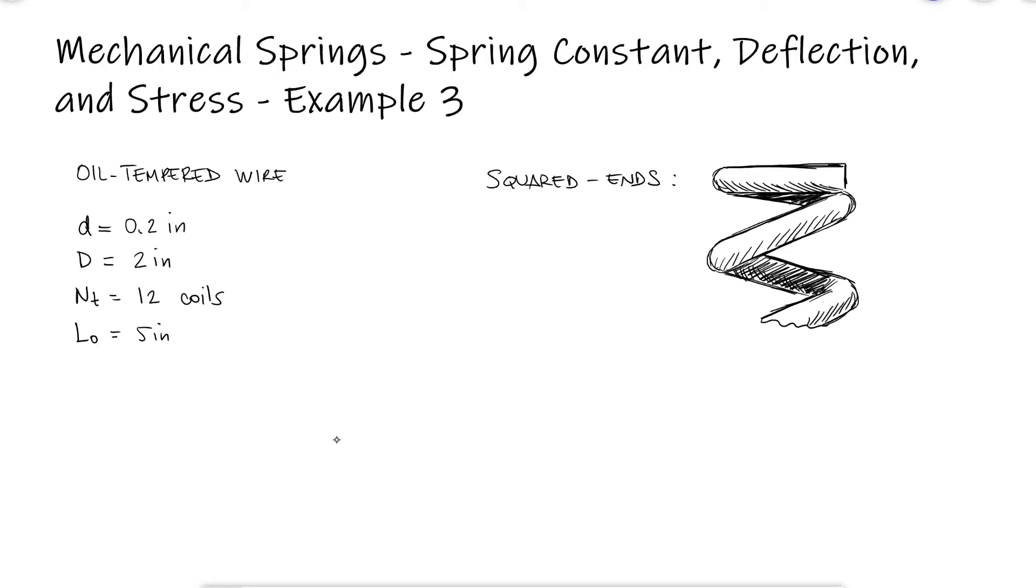What's the factor of safety guarding against yielding when the spring is compressed to its solid length? Just like I mentioned during example 1, let's assume that we know how to calculate the shearing yield strength and that value is 99 KSI.